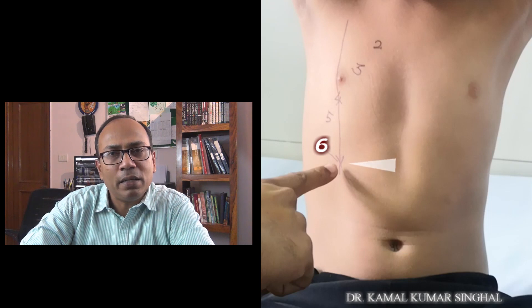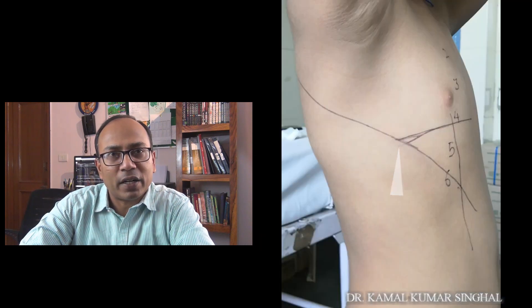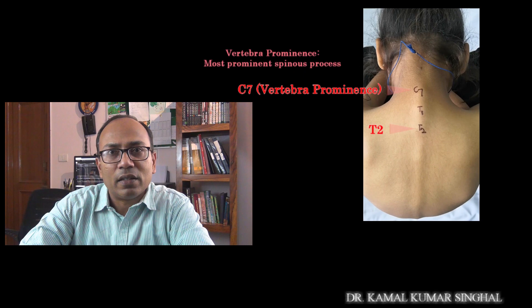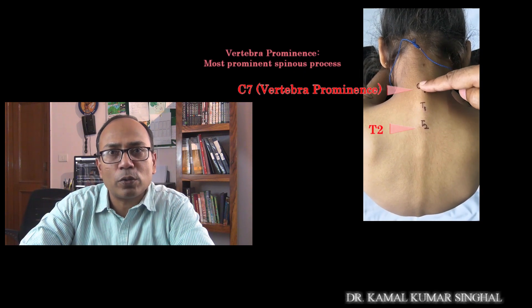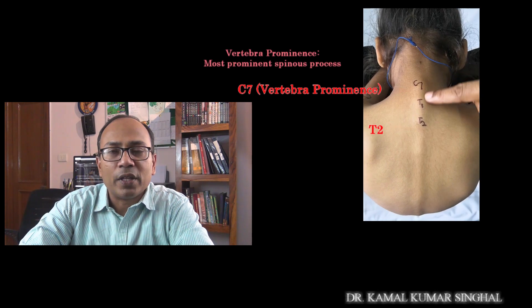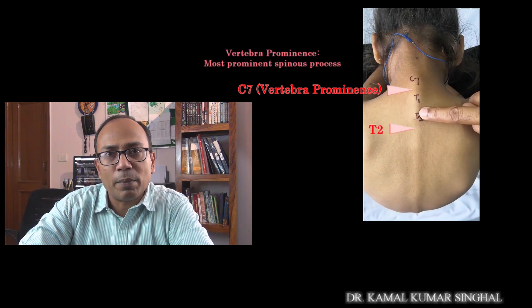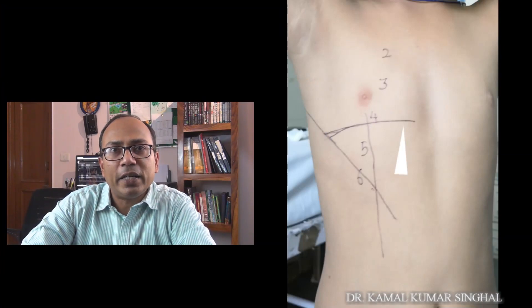Now let us look at the surface markings of the fissures and lobes. The oblique, also called the major fissure, corresponds to a line passing through the sixth rib in mid clavicular line and the fifth rib in the mid axillary line till the second thoracic spine. This corresponds to the upper border of the lower lobe, and the surface markings on both sides are similar as far as the oblique fissure is concerned. The transverse fissure, also called the horizontal fissure or minor fissure, on the right side is drawn by joining a horizontal line from the fourth costal cartilage anteriorly to meet the oblique fissure at the fifth rib in mid axillary line.